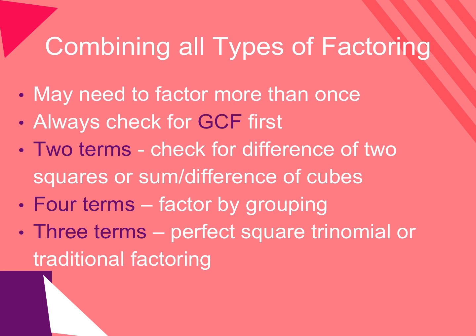Always look for a greatest common factor first. After you factor out the GCF, you may be left with only two terms — and maybe those two terms are the difference of two squares, or maybe they are perfect cubes, so it may be the sum or difference of two cubes. Or maybe after pulling out a GCF, you'll have four terms and need to factor by grouping, or three terms that form a perfect square trinomial or factor traditionally.